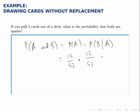If we multiply those two together, we get in decimal form a probability of 0.0588, or about a 6% chance.